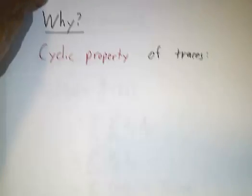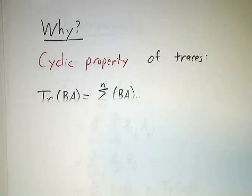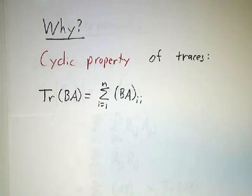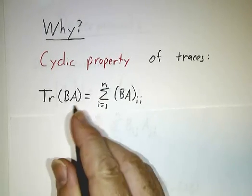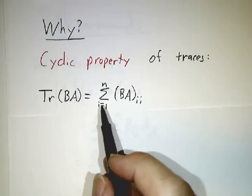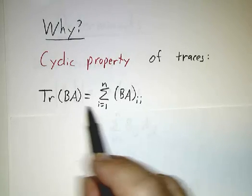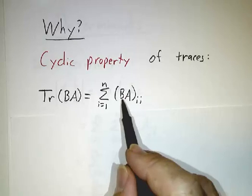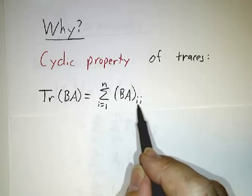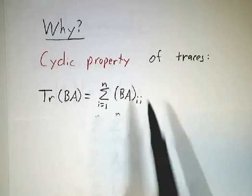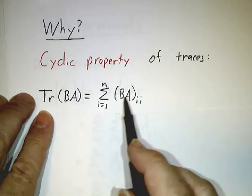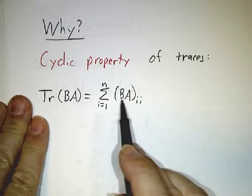Why should this work? There's something called the cyclic property of traces. If you have the product of any two matrices, these are two square matrices of the same size. You take their product and ask for the trace of that, that's the sum of (AB)ii, where i goes from 1 to n. We've got a formula for the ij entry of a product.